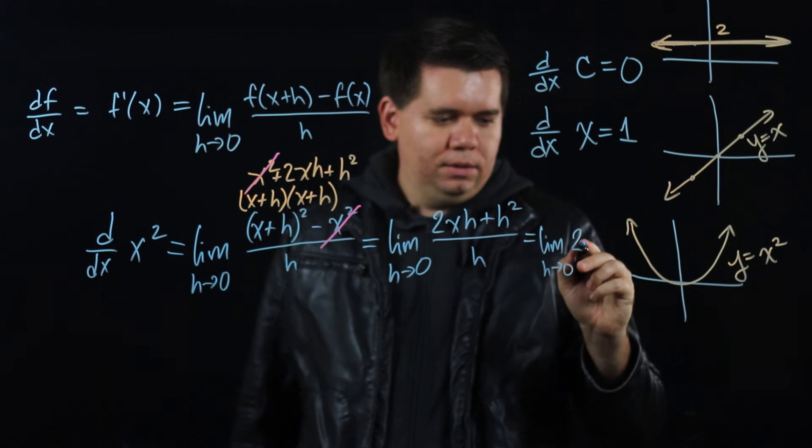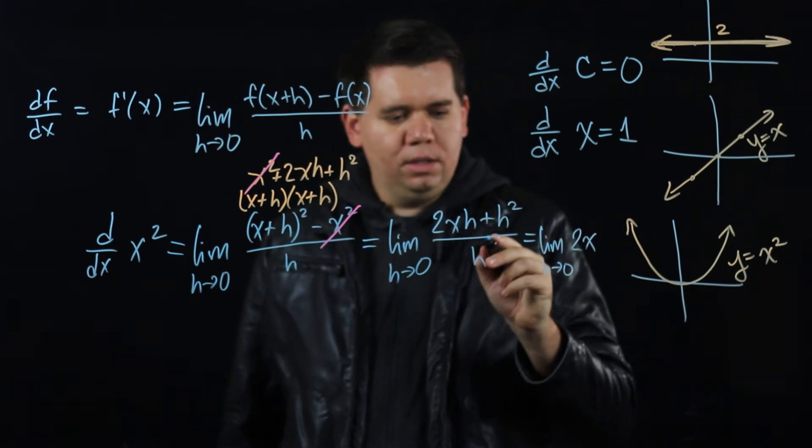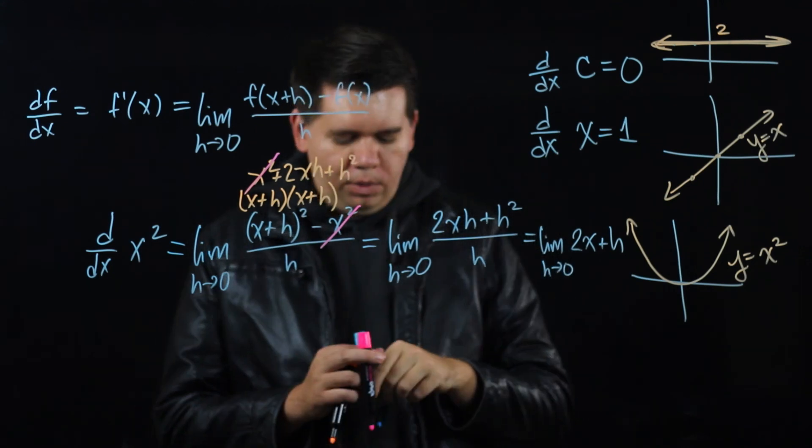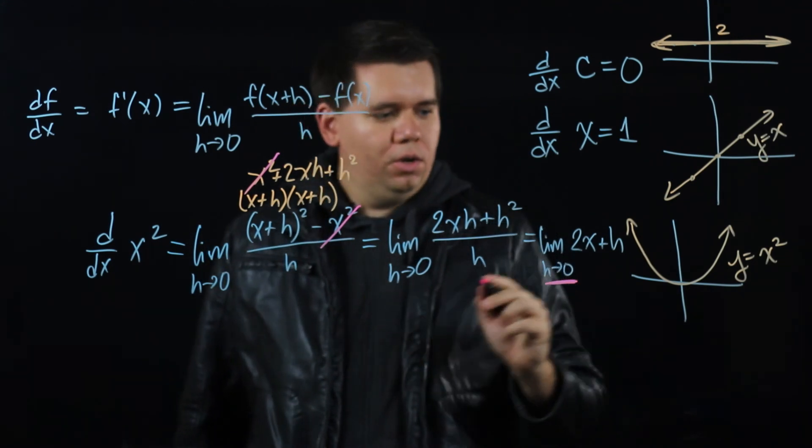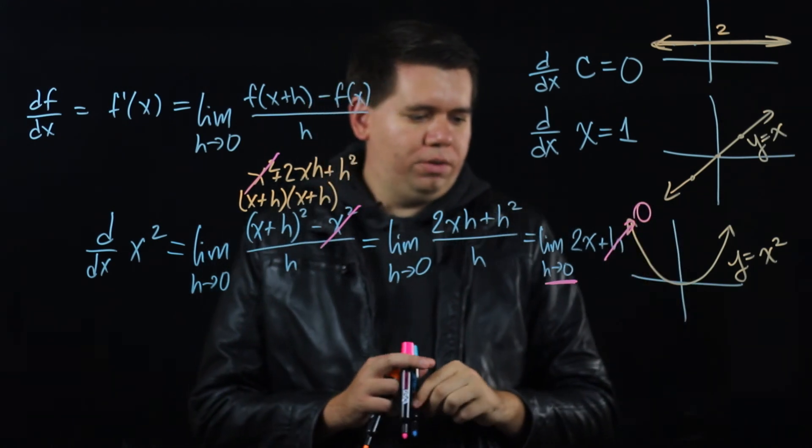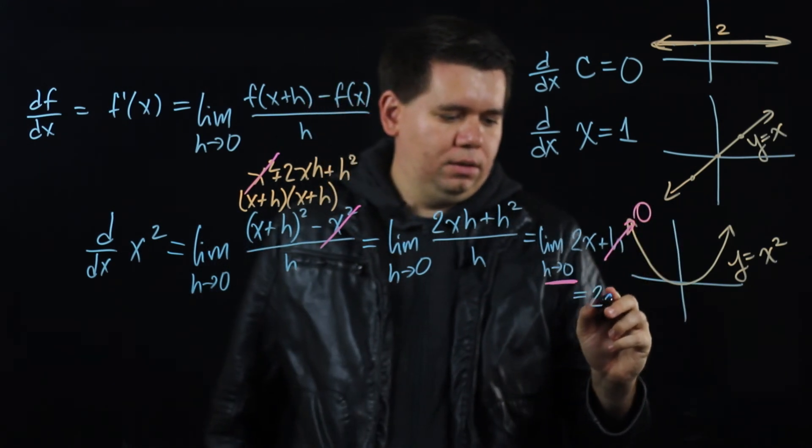Because this h cancels plus just a single h. And then we ask what happens as h goes to 0. Well, as h goes to 0, that last h goes to 0, leaving you with just 2x.